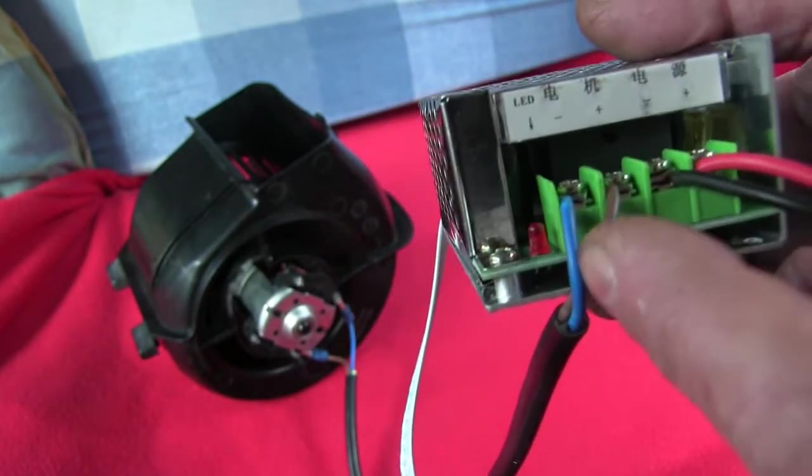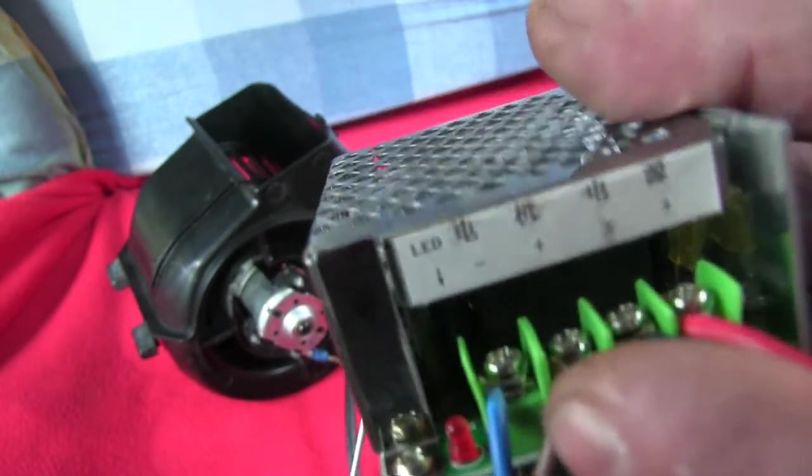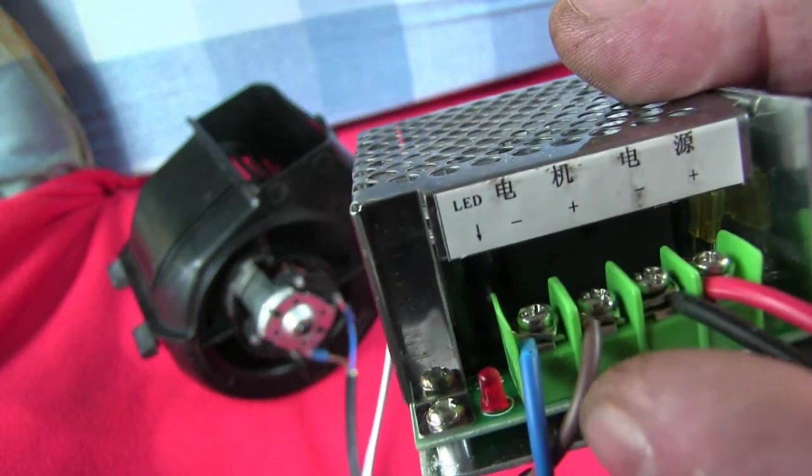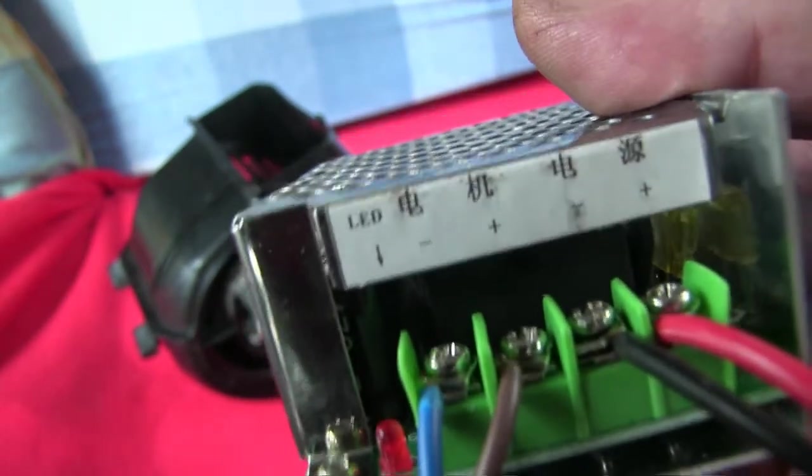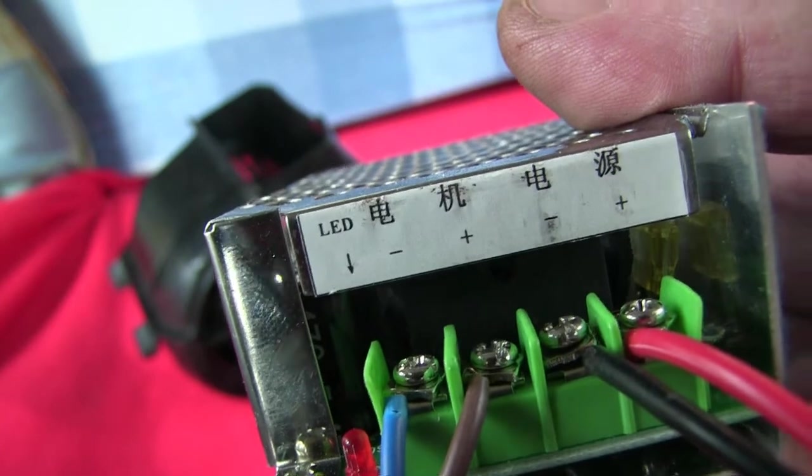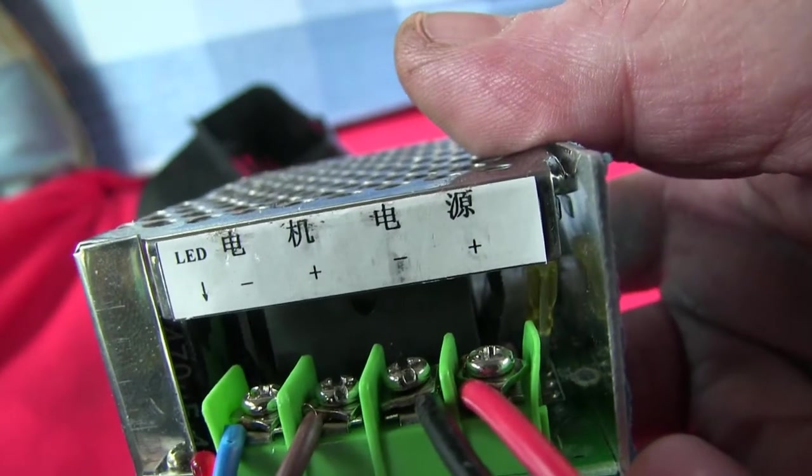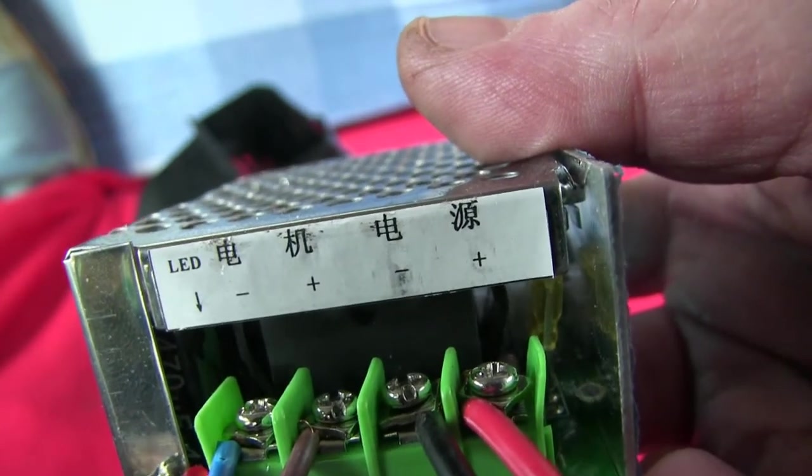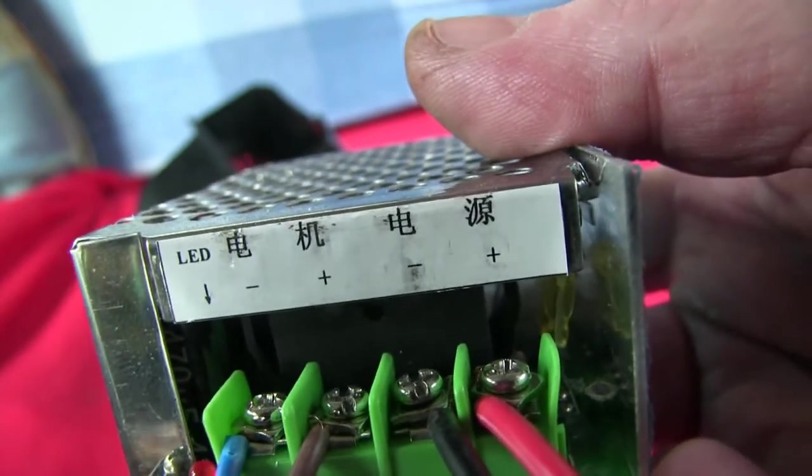But on this particular one, the fan motor goes to these two terminals, the marked plus and minus. And if you look at those symbols, you see the Chinese symbols, and you look at the symbols for the battery, it's the second symbol that sort of gives it away.